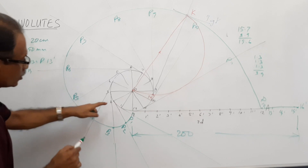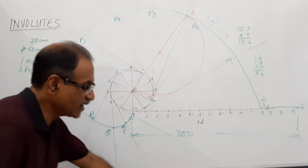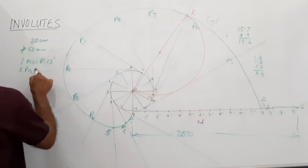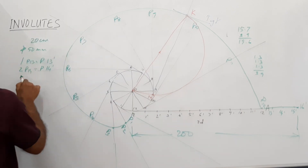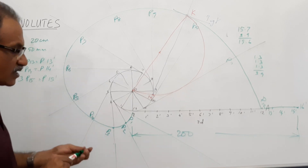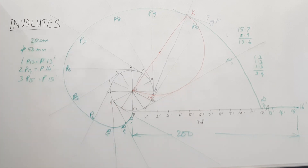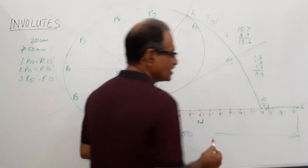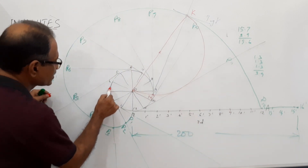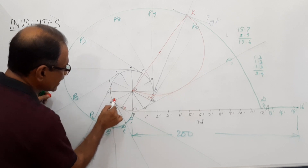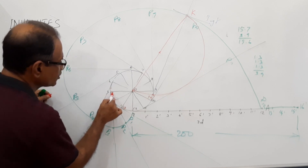Similarly, 2·P14 gives you P14 dash. Take that distance and you get P14 there. Then 3·P15 equals P15 dash. Now there is a small distance remaining from 15 dash to 16 dash.